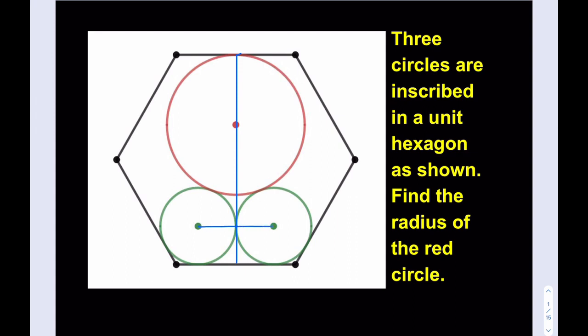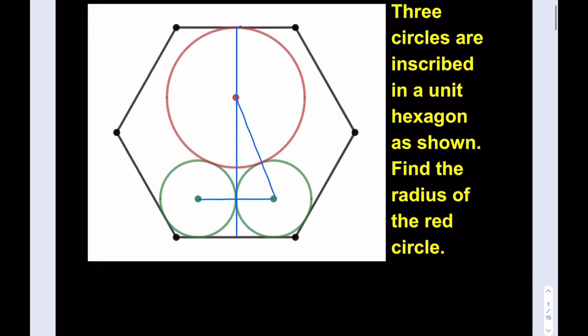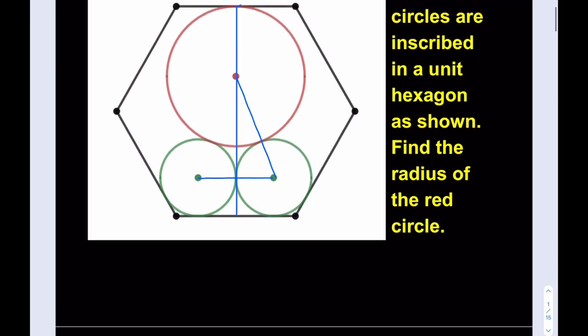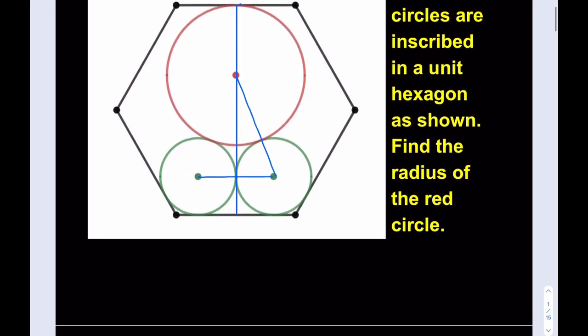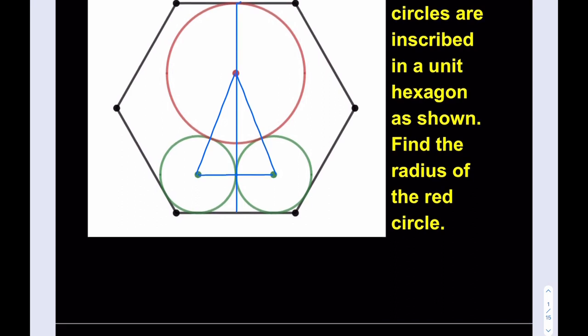And then we're going to make two right triangles here. I don't really have to deal with both of them because they're identical — from symmetry they're congruent. So we need to find the radius of the red circle, but in order to do that we need to find the radius of the green circle first. I'm just going to find the radius of the green circle because that's not too hard to find.